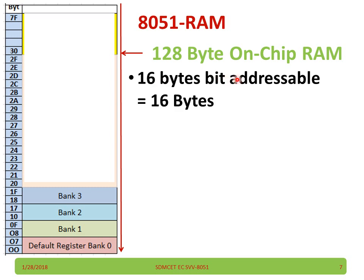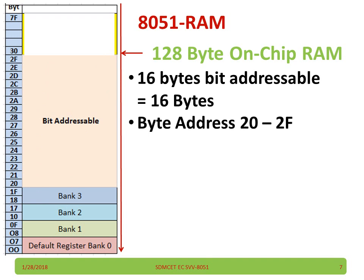16-byte bit-addressable area is available and it starts from 20H to 2FH — total 16 bytes. These are byte-addressable, meaning at a time you can access all 8 bits. But in the bit-addressable area you can access individual bits. The byte addresses start from 20H to 2FH.